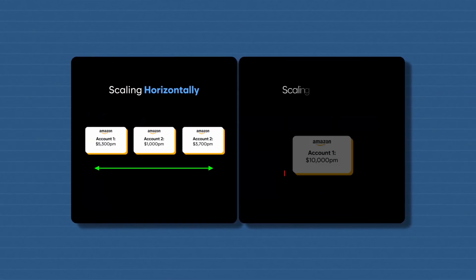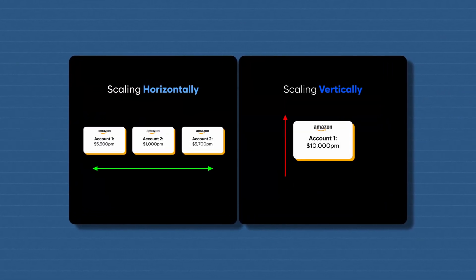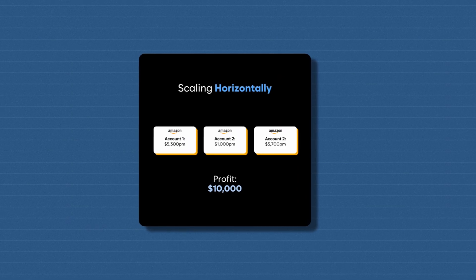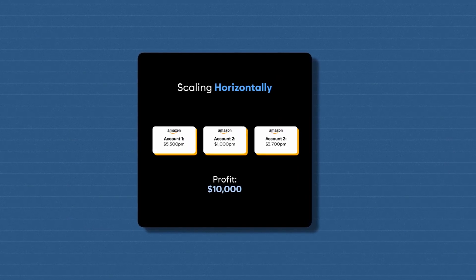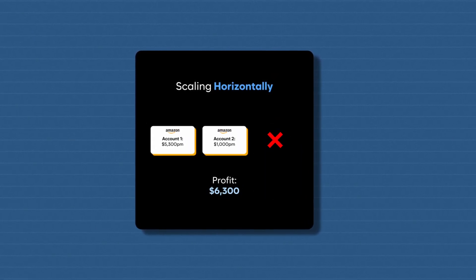Imagine being able to manage several seller profiles on sites like Amazon, Etsy, or TikTok Shop — each with its own unique identity — without the risk of being detected and banned. And scaling horizontally, not necessarily vertically, which protects your profits by diversifying across several different accounts so if one goes down, you don't lose everything. Trust me, I know how that feels.